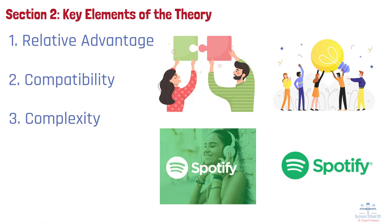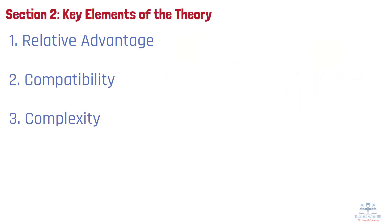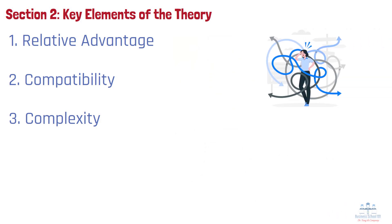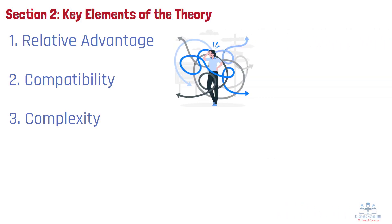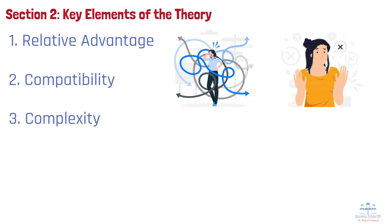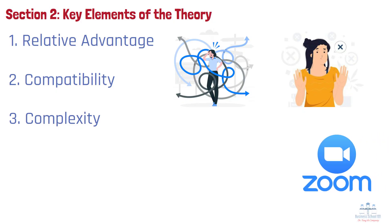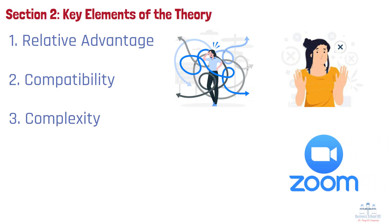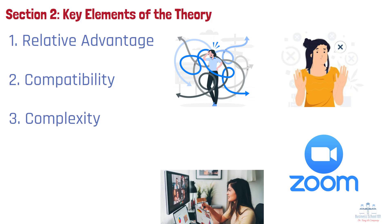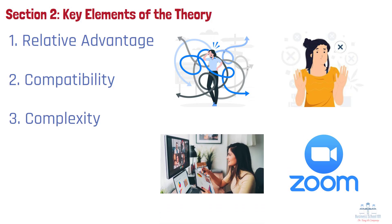Number 3: Complexity. The more complex or difficult an innovation appears, the slower its adoption. If users don't understand how it works or feel overwhelmed, they'll resist change. That's why companies like Zoom gained popularity — because they offered a user-friendly interface and simple login process at a time when many people were switching to virtual communication during the pandemic.